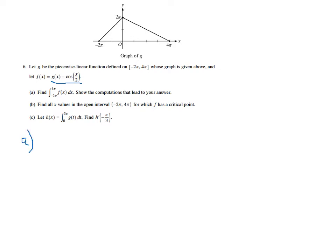So for part A, I'm going to take the integral from negative 2π to 4π. First of g(x) dx, and then subtract from that the integral from negative 2π to 4π of the cosine of x over 2 dx. Just like for derivatives, we know that the difference of the integrals is equal to the integral of the difference, so you can do that, no problem.